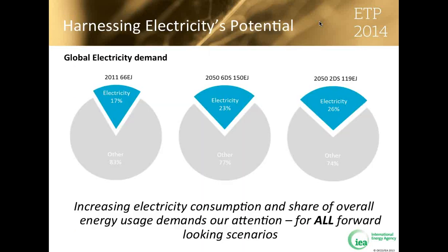Thank you, Didier. Electricity demand is growing across all sectors we analyze — between 80 and 130 percent by 2050. This is not just a climate issue. Regardless of which scenario we follow, electricity is becoming more important. In the 2DS, energy efficiency moderates some of this growth, but does not make electricity any less important. Across all scenarios, electricity grows as a share of overall energy demand from 17 percent in 2011 to 25 percent or more by 2050. In the 2DS by 2050, electricity overtakes oil products as the largest energy carrier in the energy system.